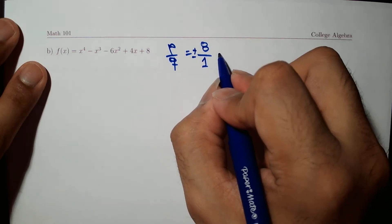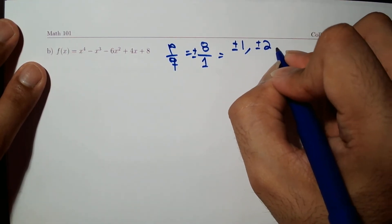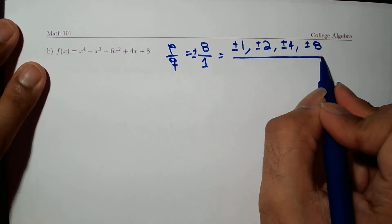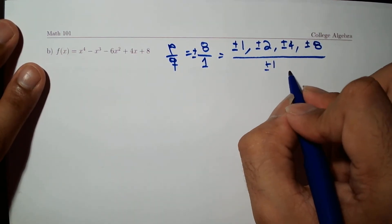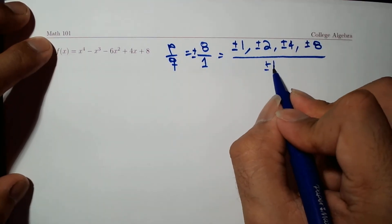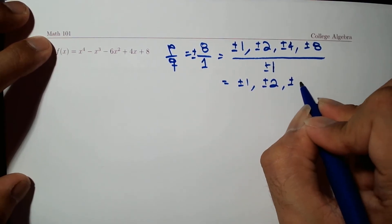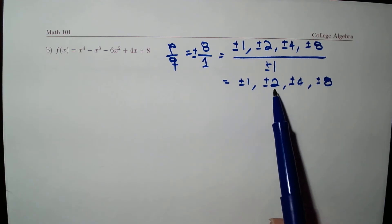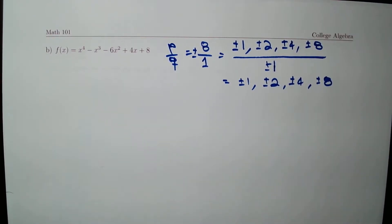Listing all possible factors of 8: plus or minus 1, 2, 4, and 8. The denominator factors of 1 are just plus or minus 1. So the potential zeros are plus or minus 1, 2, 4, and 8 — that's 8 potential zeros. However, the degree of the polynomial is 4, so the highest number of actual zeros is 4.